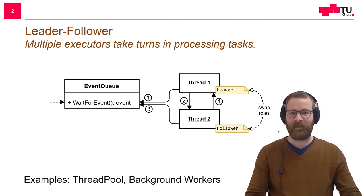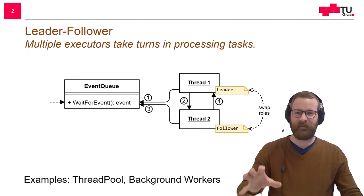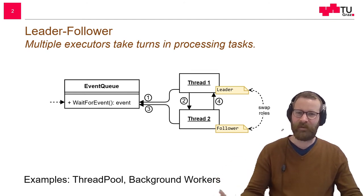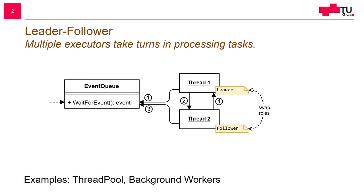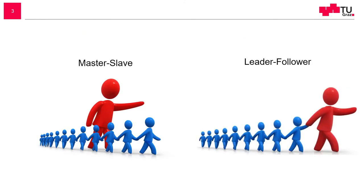Let me give you a real-life example. Master-slave has a coordinator running in parallel to the slaves, whereas in leader-follower the first one is the leader and goes in line with all the followers.